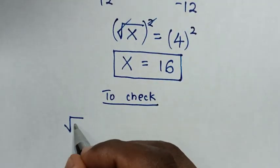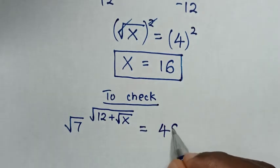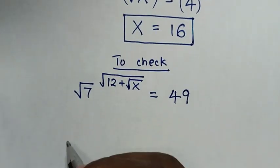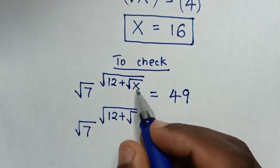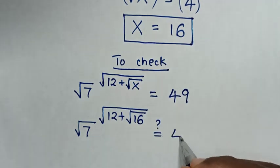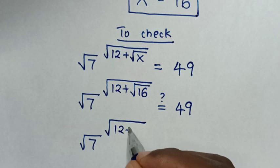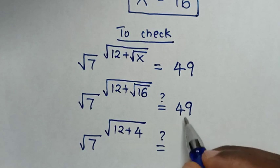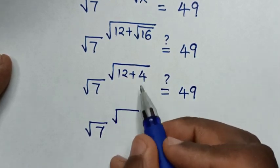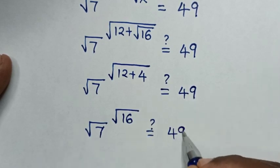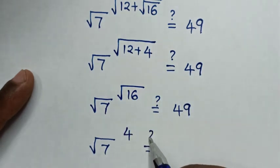Now to check if the value of x is correct, we substitute into the original equation: square root of 7, raised to the power of square root of 12 plus square root of x, equals 49. Substituting x equals 16: square root of 7 to the power of square root of 12 plus square root of 16. Square root of 16 is 4, so it becomes square root of 7 to the power of square root of 12 plus 4, which is square root of 16, giving us 4.